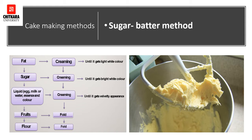The first method is the sugar batter method, also known as the creaming method. In this method, all the fat and sugar are creamed together. In practice, all the fat should first be blended together, either by machine or by hand, thoroughly. Then sugar is added gradually, continuing the process, as adding it all at once will adversely affect the aeration process and may take extra time to achieve the desired result. When adequate aeration is achieved, the mixture becomes very light, fluffy, and brighter in appearance.